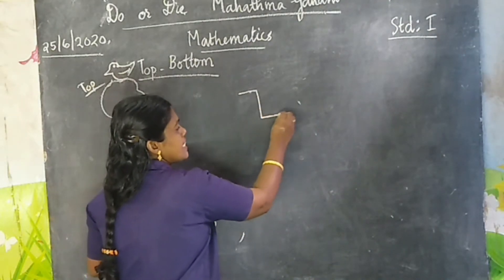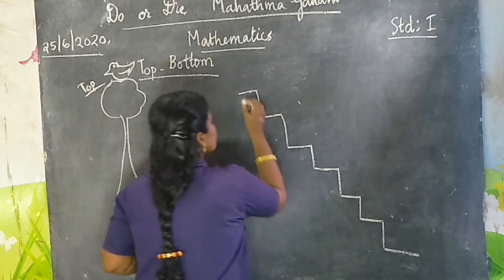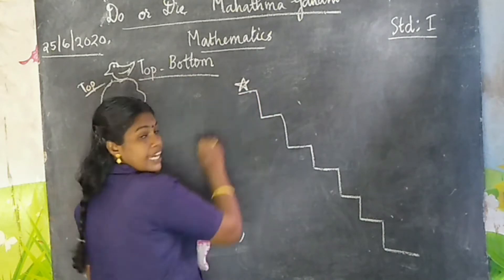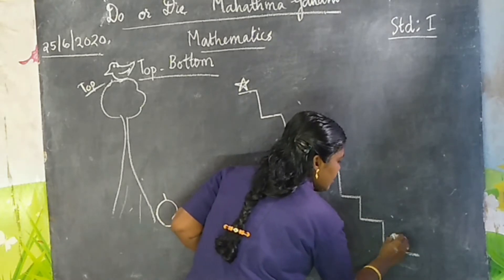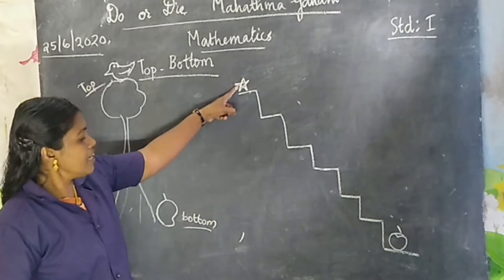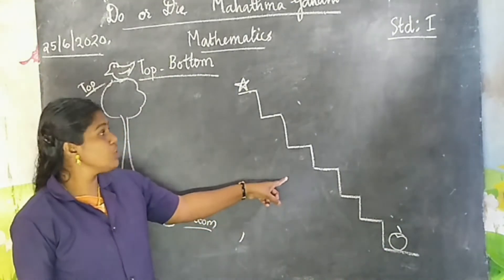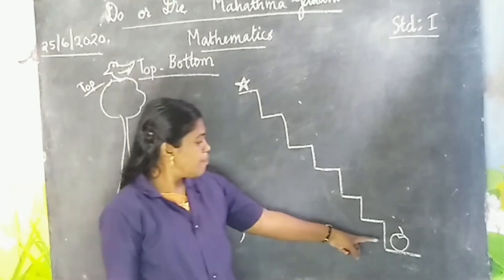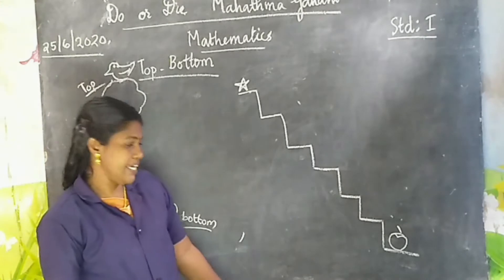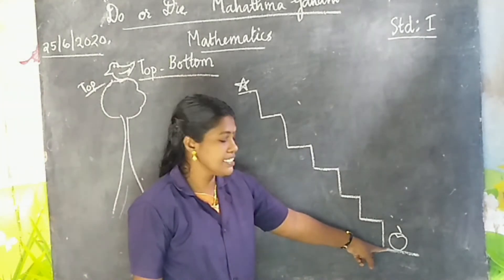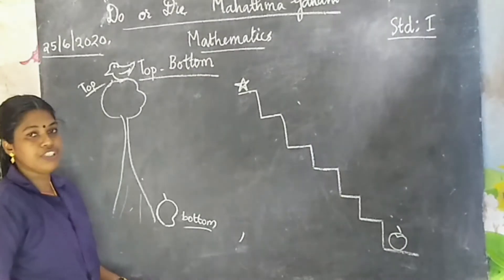Next example. This is a staircase. Here I put a star and here I put an apple. A star and an apple. Which one is at the bottom of this staircase? Star or apple? Apple is at the bottom of this staircase and star is at the top of this staircase.